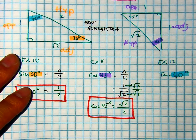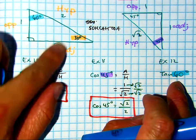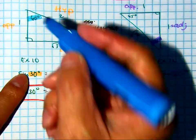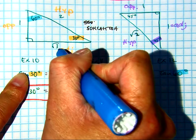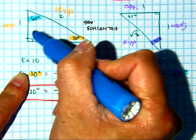Although this triangle is already labeled, I have to relabel it based on the starting angle. Class, this side now becomes the opposite. This one is still the hypotenuse. And then the last side is the adjacent.